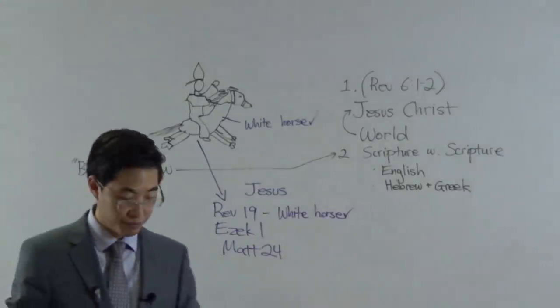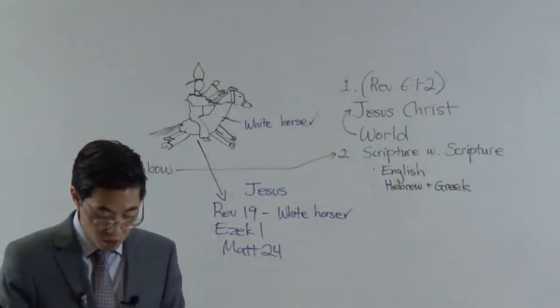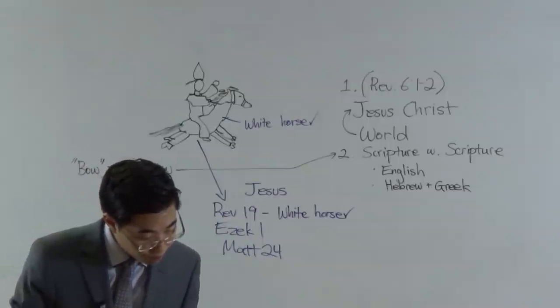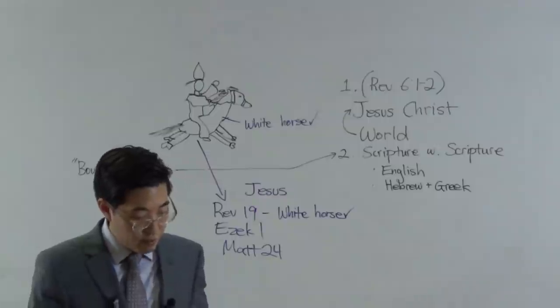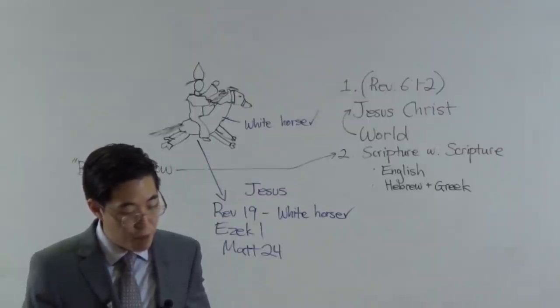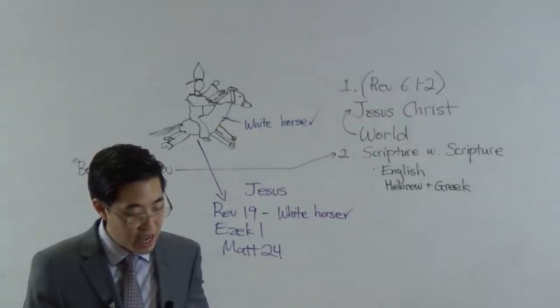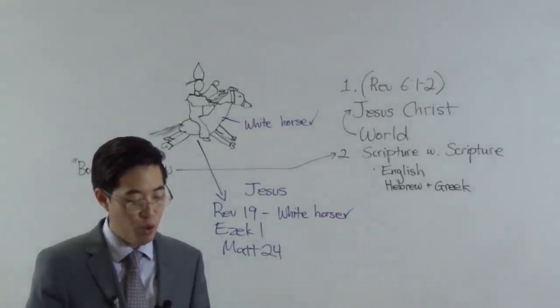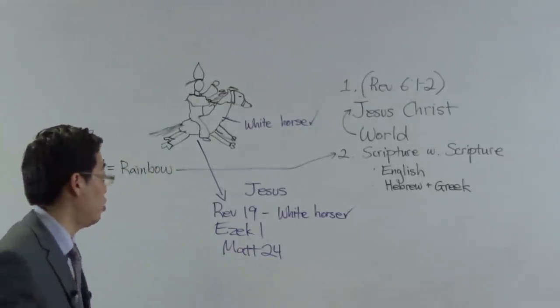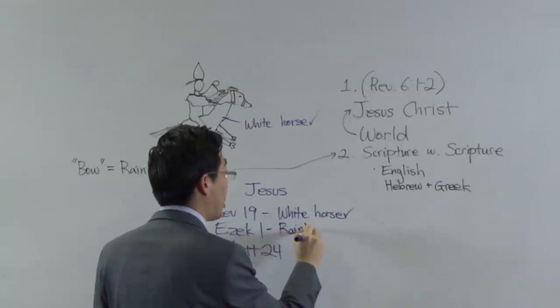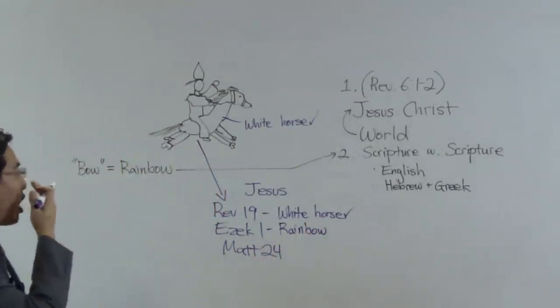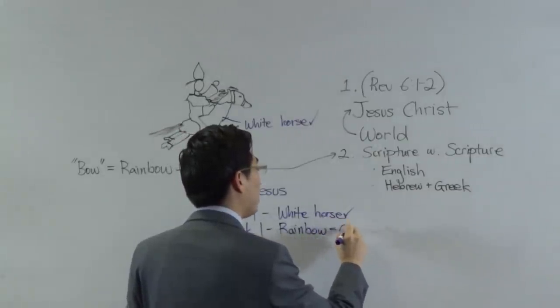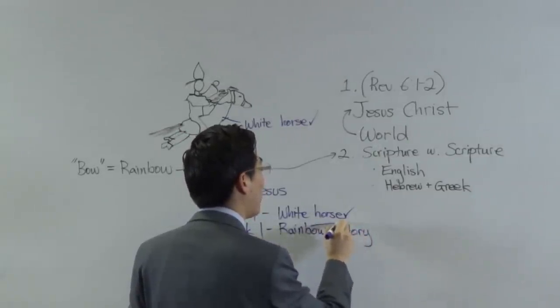Let's go to Ezekiel chapter 1. Ezekiel chapter 1, and we'll read verse 28. As the appearance of the bow that is in the cloud in the day of rain, so was the appearance of the brightness round about. This was the appearance of the likeness of the glory of the Lord. Ezekiel 1 says that this rainbow, which he sees up in the third heaven, remember Revelation chapter 4? There's a rainbow surrounding God's presence, right? So that's what Ezekiel's saying. But this rainbow is representing the glory of God. This is the glory of the Lord, it says.